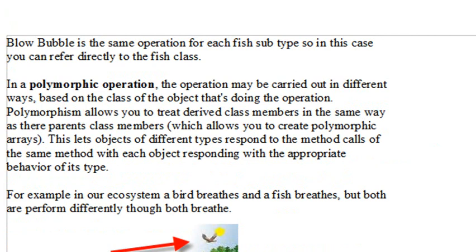Blow bubble is the same operation for each fish subtype. So in this case, you can refer directly to the fish class. And this really is the key to what we want to accomplish, because in a polymorphic operation, the operation may be carried out in different ways, based on the class of the object that it's doing the operation. Polymorphism allows you to treat the derived class members in the same way as their parents' class members. This allows for such things as polymorphic arrays.